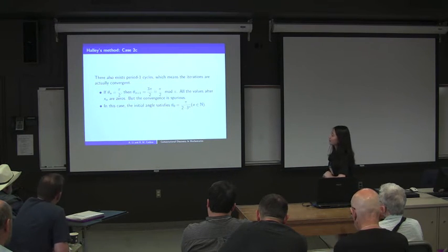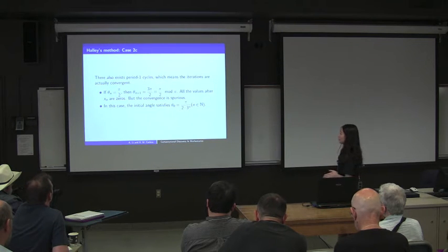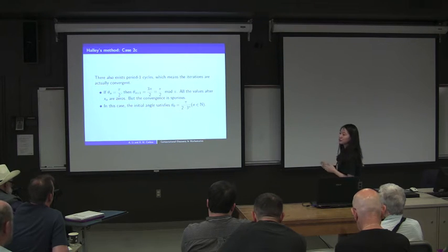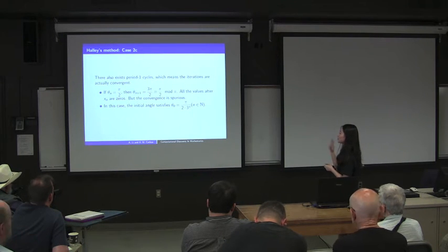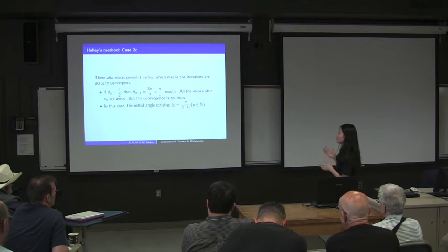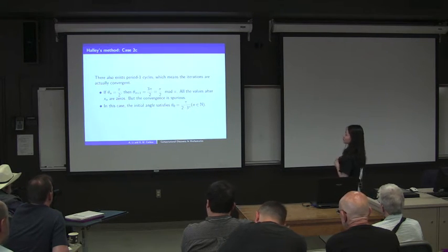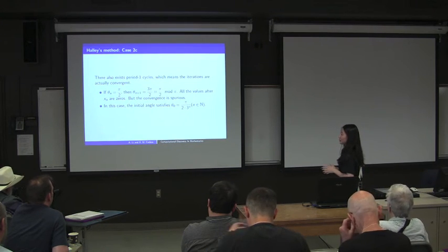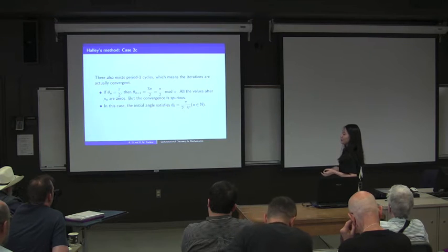There also exist period-1 cycles, which do not exist for Newton's method — meaning the algorithm is actually converging. If one step returns 0, the angle is congruent to π over 2 modulo π. The triple of this angle is also congruent to π over 2 modulo π, so the next iteration also returns 0. All subsequent xn are zero. However, this convergence is spurious, since x equal to 0 is not the root we are looking for.